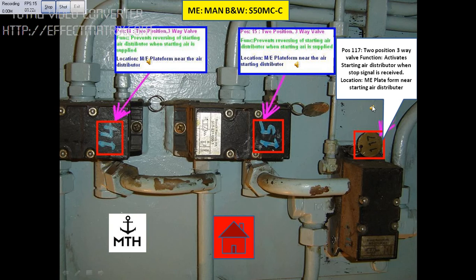This block is position number 117, which is a 2-position 3-way valve. The function of this valve is to activate the starting air distributor when a stop signal is given. Location: main engine platform, near the air distributor.